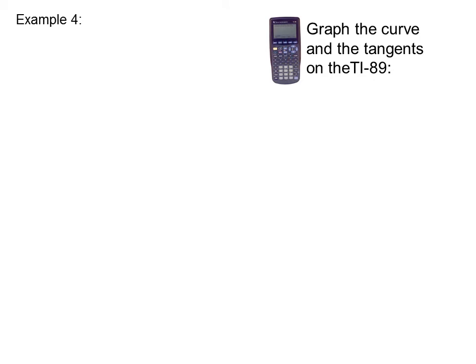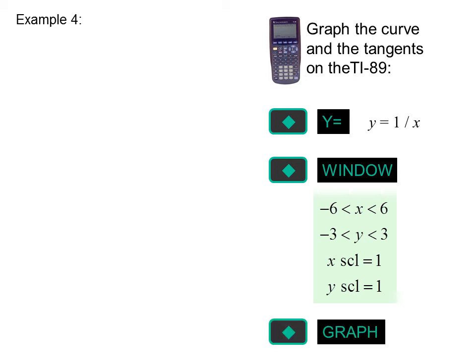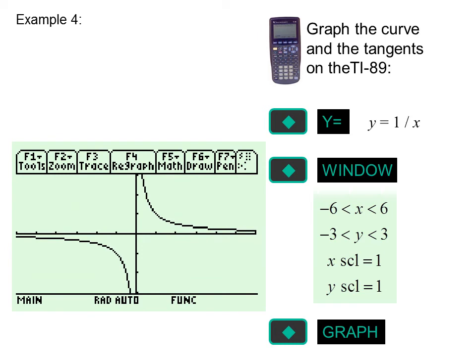Graph the curve and the tangents in the TI-89. Press diamond Y, equals, Y equals 1 over x. Diamond Window, and set up our window so x goes from negative 6 to 6, y goes from negative 3 to 3, and the x and y scales are both 1. Then press diamond Graph. There's our graph.